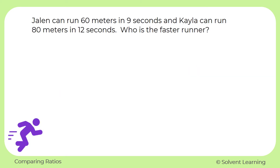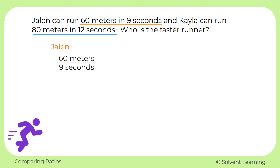Here's our second example. Jalen can run 60 meters in nine seconds and Kayla can run 80 meters in 12 seconds. Who is the faster runner? If we set up a ratio using how far they run per how many seconds, we can convert that to a unit rate to compare their speeds and see who runs faster. Since one of our values involves time, we want that value to be in the denominator. So for Jalen we'll have 60 meters over nine seconds, keeping the seconds in the denominator.